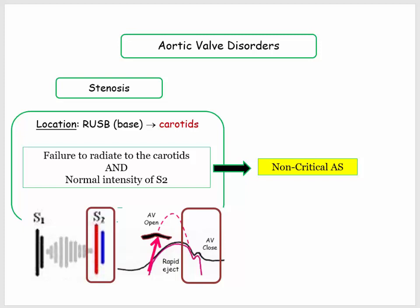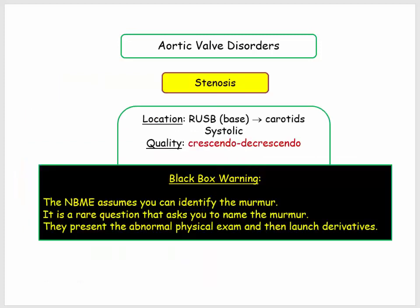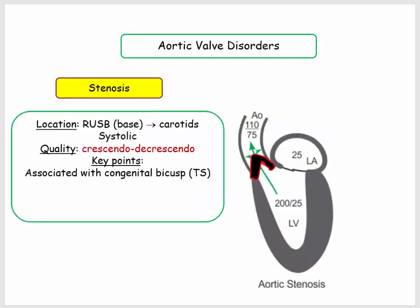Whereas these underscore key components of the exam, this is not step one fodder, but is a recurrent theme in clinical medicine. The NBME describes patients with abnormal auscultatory findings. They assume you know the murmurs and then launch the derivatives. You can't get the derivatives without identifying the valvular disorder causing the abnormal physical exam finding. Step one is to identify the stated murmur. Here is a summary of the key points we will be discussing.